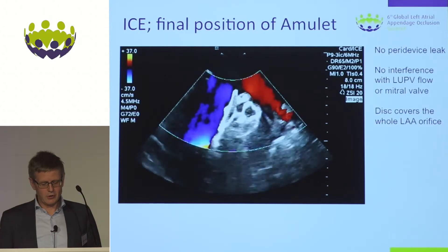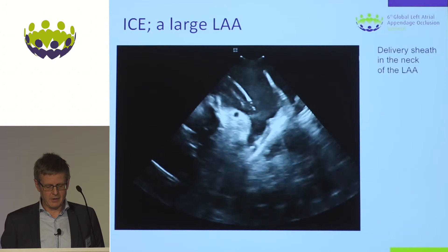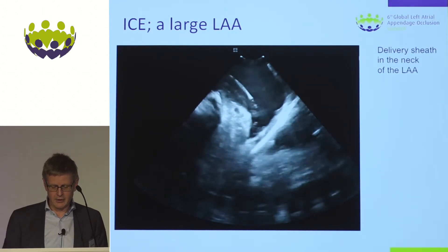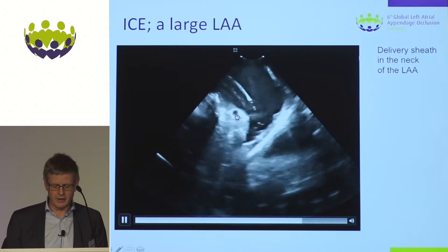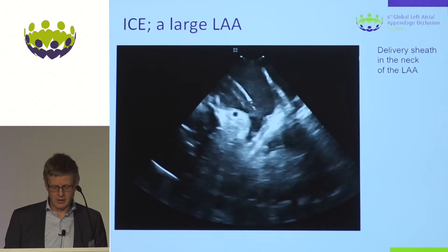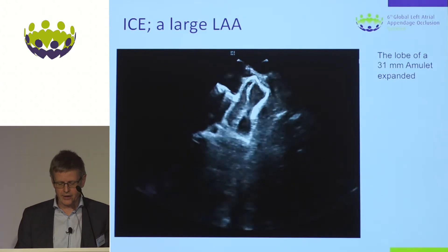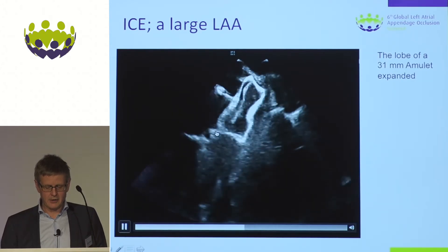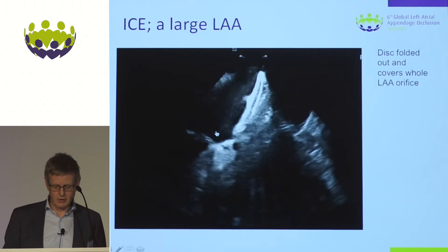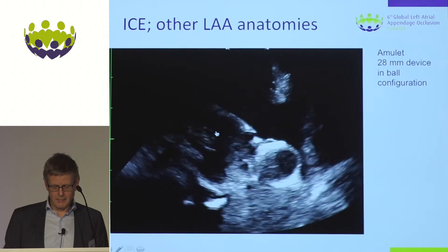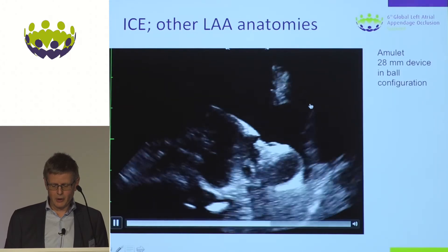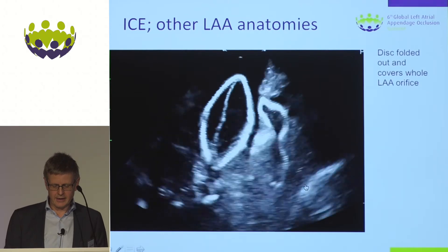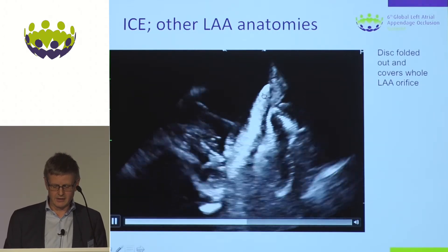Being so close to the left atrial appendage with ICE allows very good near-field imaging. Additional anatomy examples are shown: a large left atrial appendage with the delivery sheath inside the neck, the circumflex clearly visible as an important anatomical marker, the lobe expanded with high-resolution near-field images showing the fabric inside the lobe of the Amulet device, the disc, and its relation to the mitral valve and circumflex. Another example shows a lobe with a small branch off the roof of the neck, the ball expanded in the neck, and clear imaging of the disc, fabric, and good wall contact.